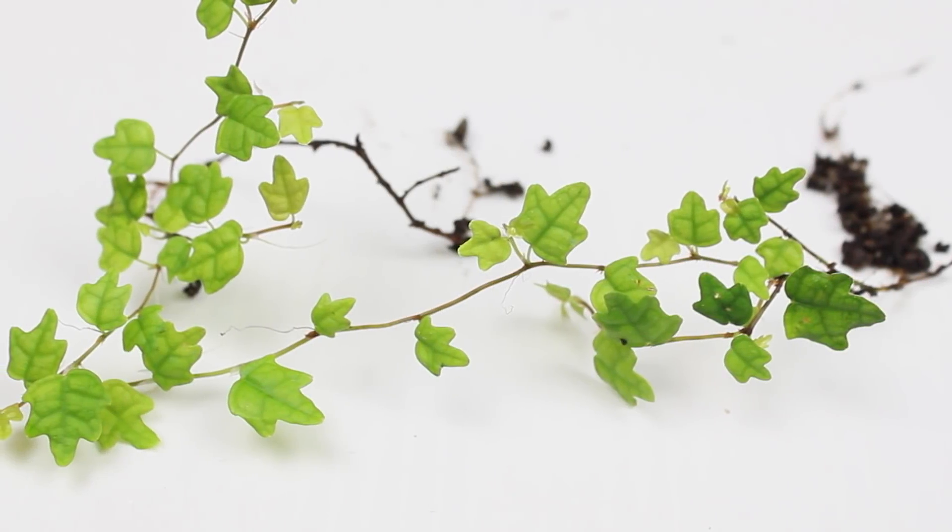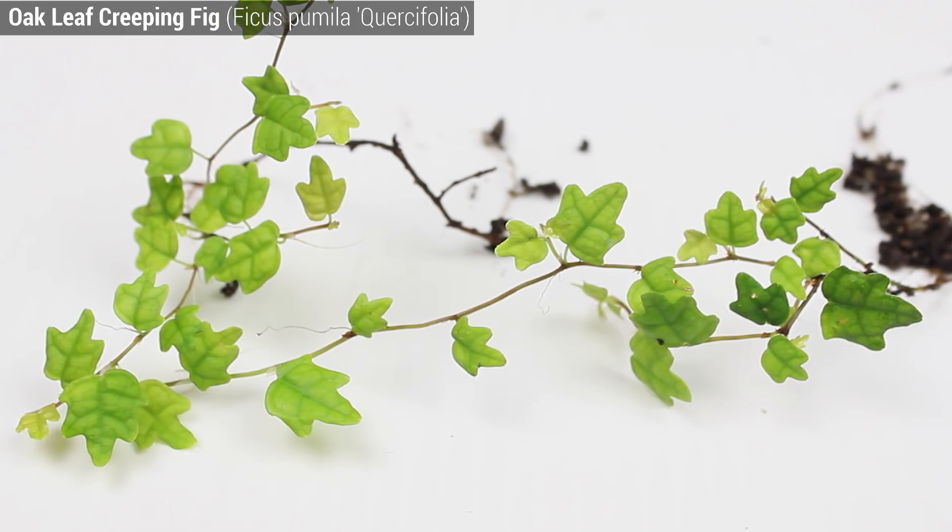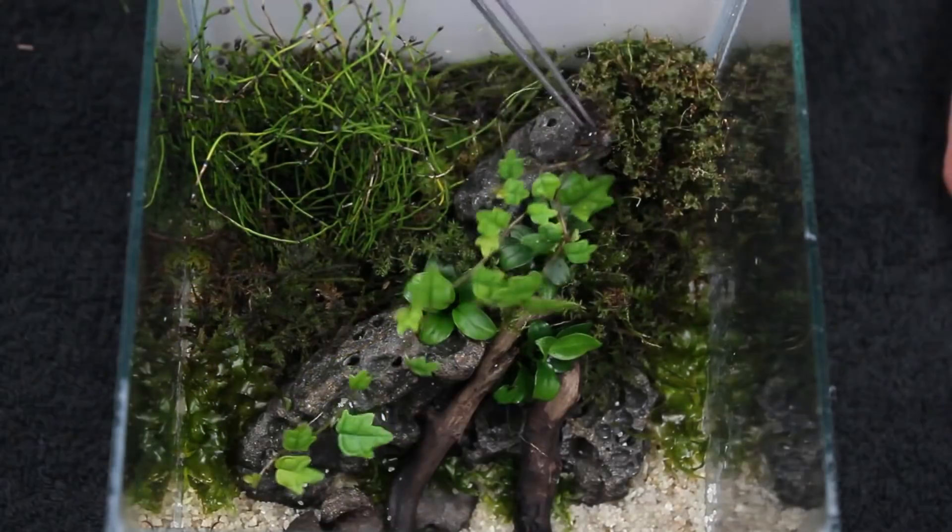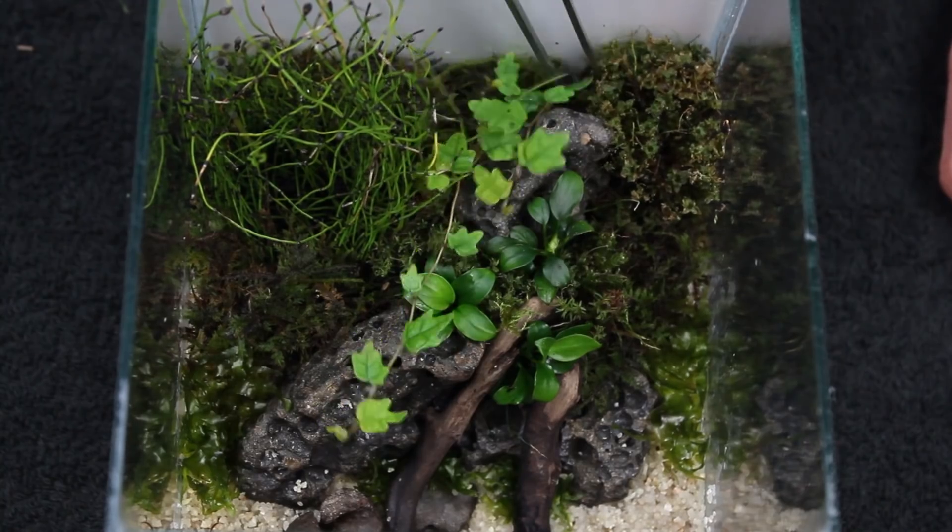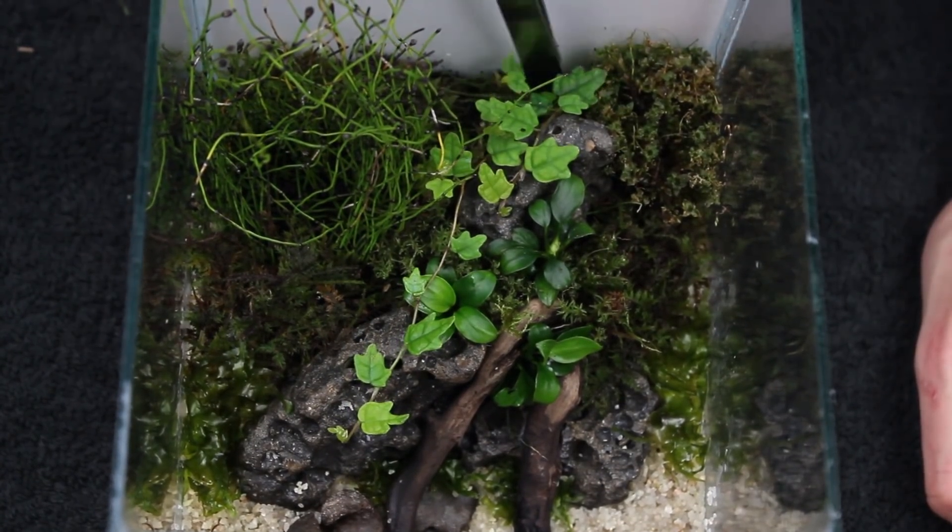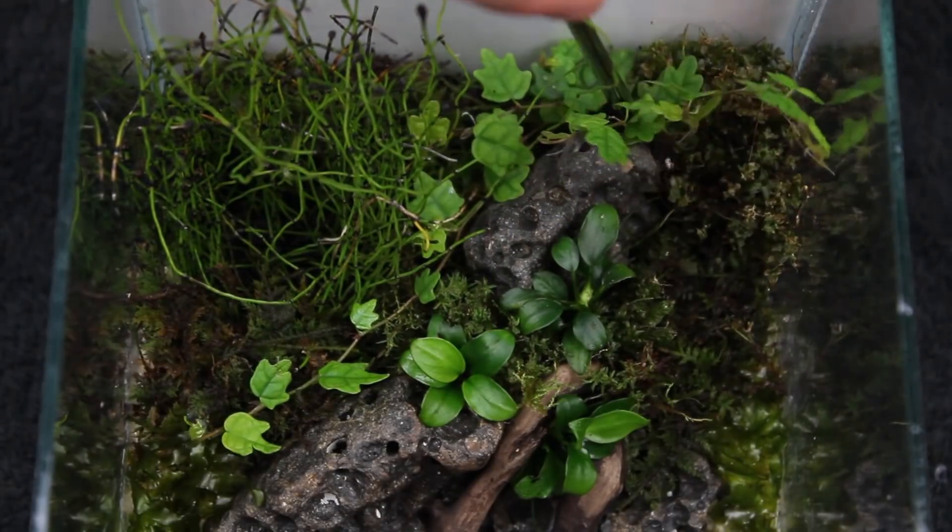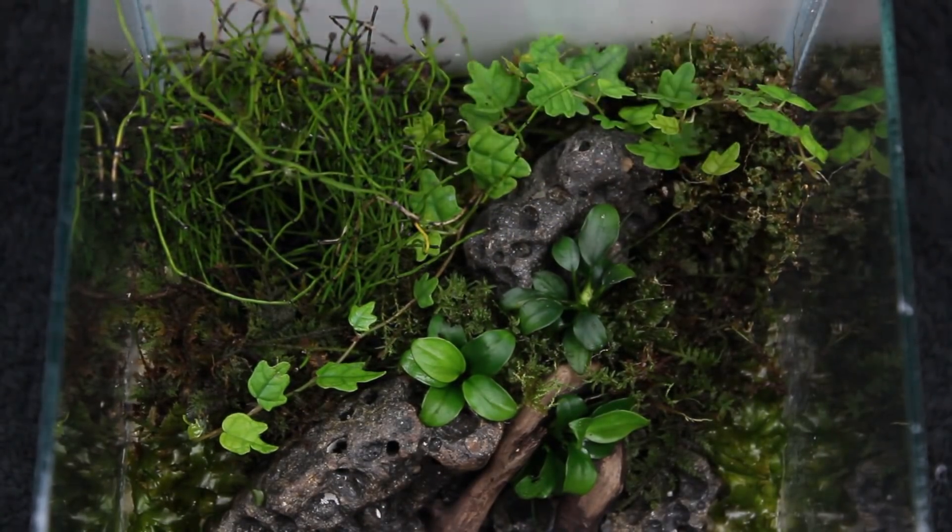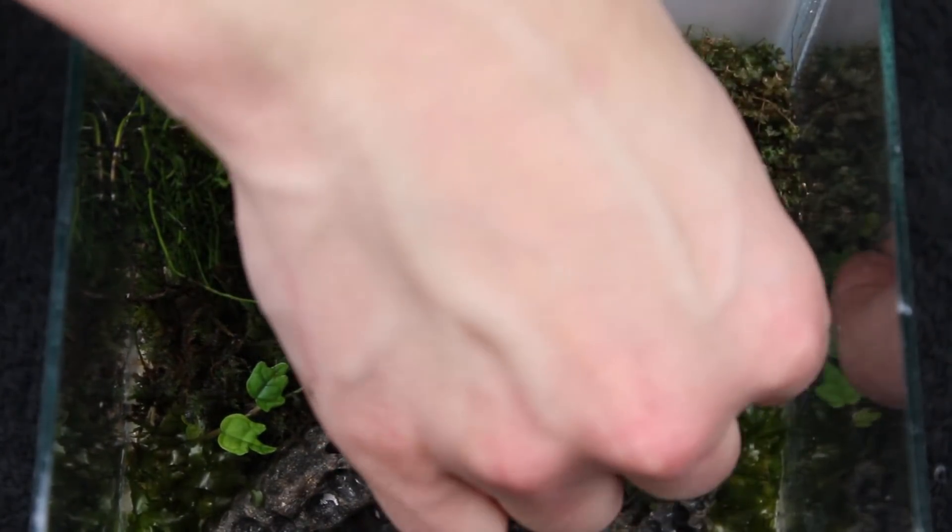Lastly we've got a few segments of Oakleaf Creeping Fig. This vining plant has really small leaves, which will add a ton of texture to the setup. If you haven't figured it out by now, the aesthetic is all about contrast created by the texture of different plants working in harmony with the hardscape.